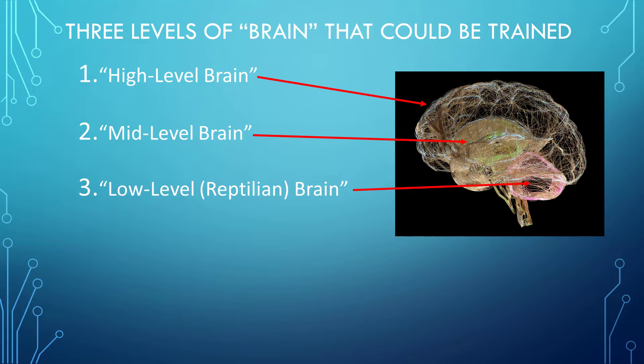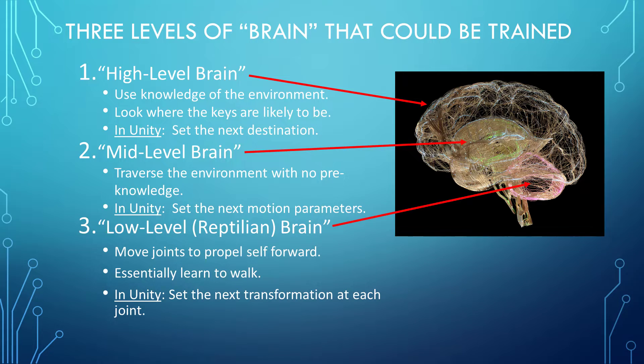Let's think a bit abstractly about how you or I make decisions. Suppose I've lost my keys and my goal is to find them. The keys are somewhere in my immediate environment — maybe in this room or a different nearby room. We all have different levels to our brains, and I can think of at least three different strategies to look for my keys using different brain levels. This slide shows three different approaches corresponding to what I am calling the high-level, mid-level, or low-level brain.